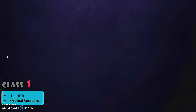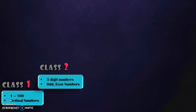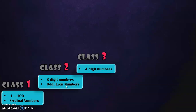In class 1, we would have studied about 2 digit numbers from 1 to 99, and would have learned about ordinal numbers. Then in class 2, we would have dealt completely with 3 digit numbers and also learned odd and even numbers. In class 3, we would have dealt all about 4 digit numbers.